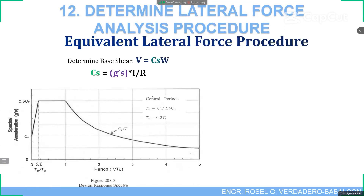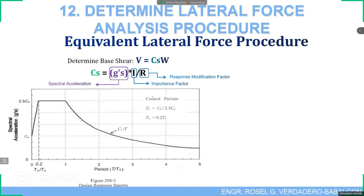To determine the base shear, we use the formula V = CS times W, where the base shear is a certain percentage of the seismic weight. CS is equal to the spectral acceleration multiplied by the importance factor I, over the response modification factor R.